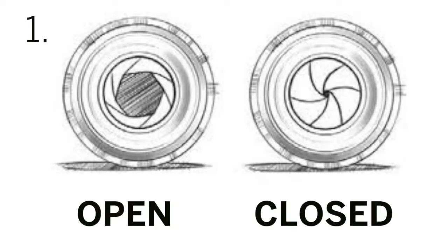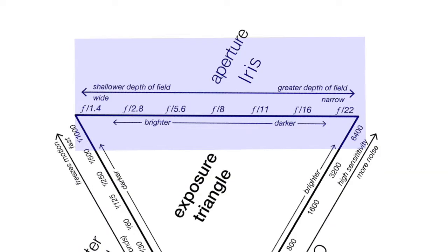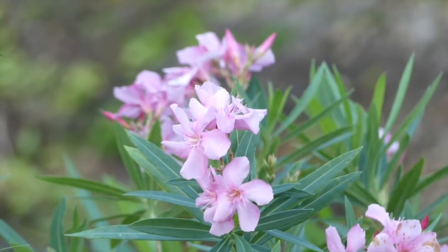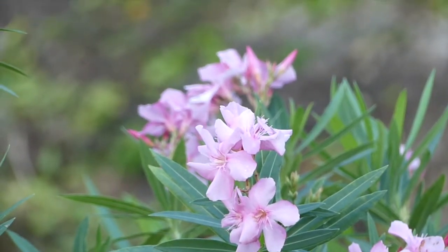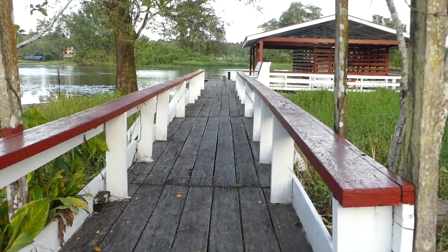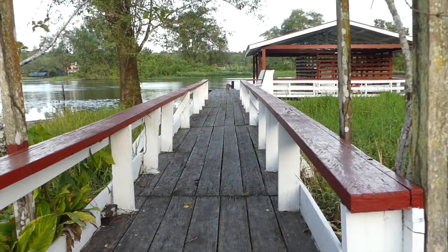The iris opens or closes to allow light in or limit the light. It is expressed in f-stops. F-stops are fractions, so 1/5.6 is larger than 1/16, and it is usually expressed simply as 5.6 or 16. Openings larger than 5.6 can create a shallow depth of field so the background is blurred. Everything remains in focus with a small aperture like 16.